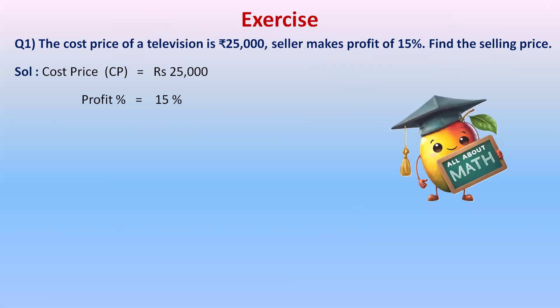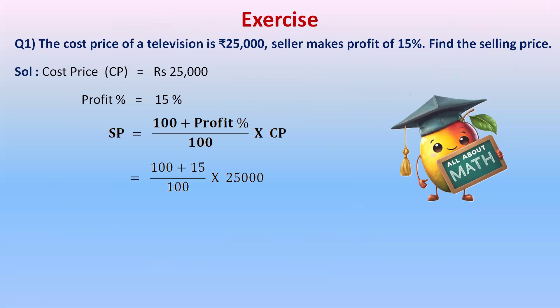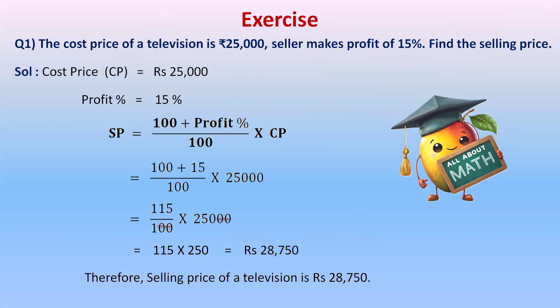Selling Price = (100 + Profit%) / 100 × Cost Price = (100 + 15) / 100 × 25,000 = 115 / 100 × 25,000. Simplifying: 115 × 250 = 28,750. Therefore, the selling price of the television is 28,750 rupees.